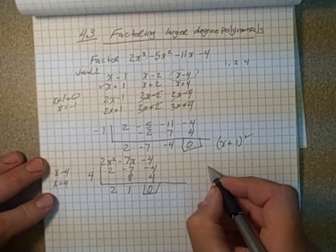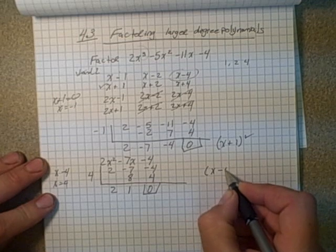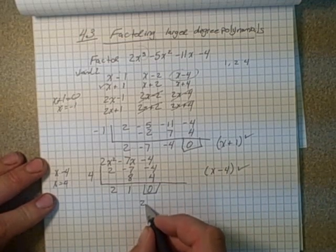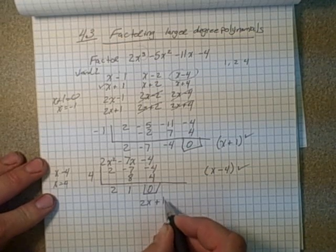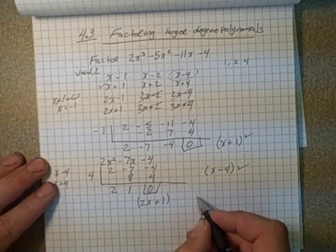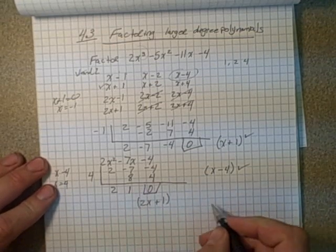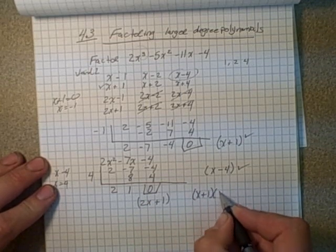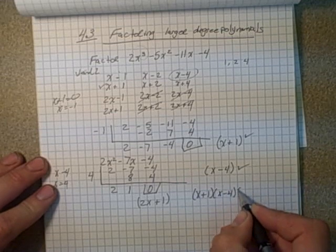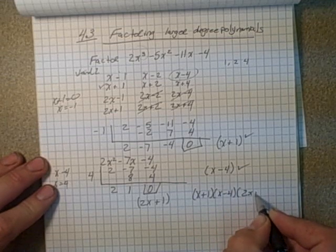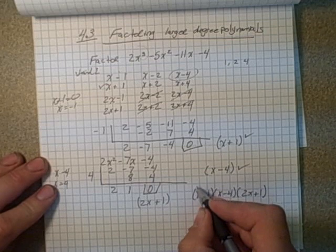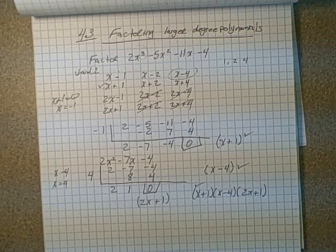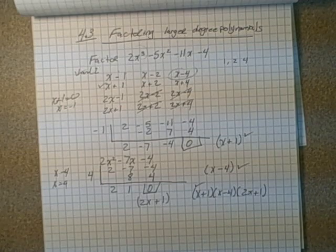So our factor of x minus 4 works. And then what's left over is 2x plus 1. So our factors, 2x plus 1, our total factors are x plus 1 times x minus 4 times 2x plus 1. And that's how you use synthetic division and factor larger degree polynomials.